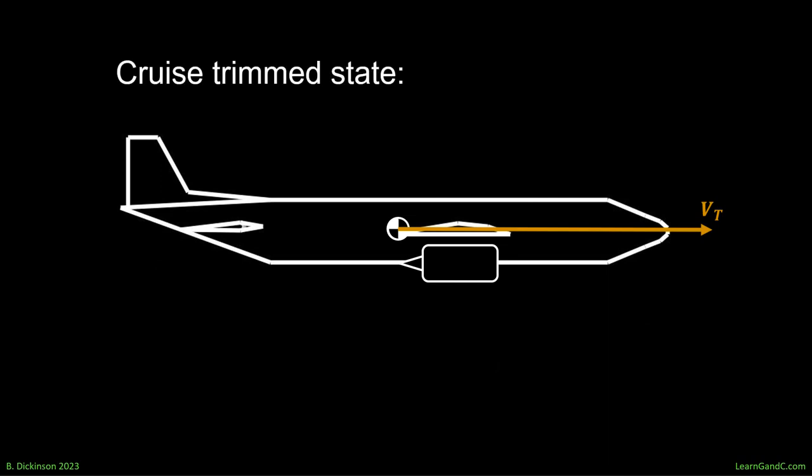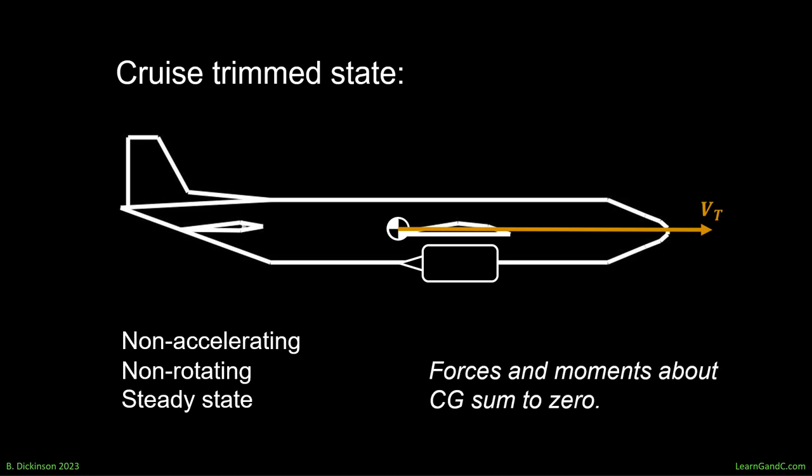In cruise, trim is non-accelerating, non-rotating, steady state flight held at constant altitude. Physically, this means the forces and moments about the center of gravity sum to zero while holding flight path angle to zero.